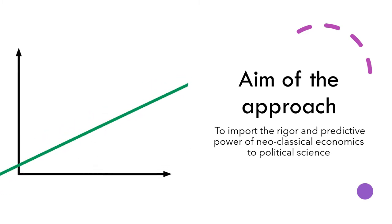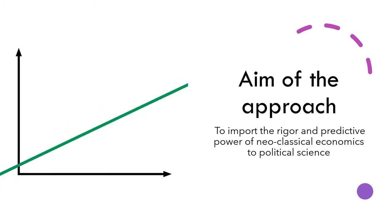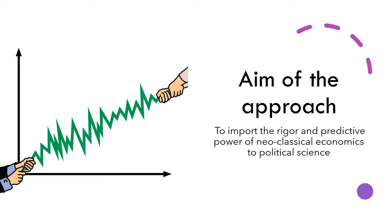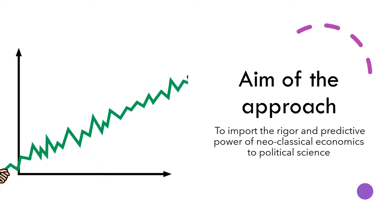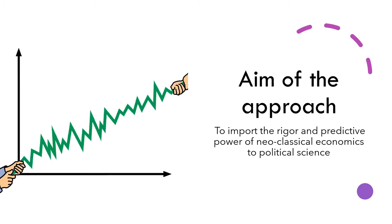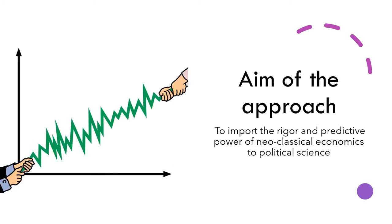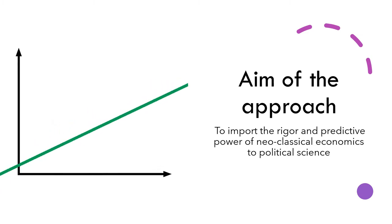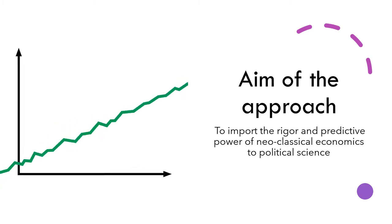For example, if a state ratifies the Universal Declaration of Human Rights, this does not mean that the state and its leaders are committed to it and its provisions, but because they see that it is in their advantage to ratify the declaration. As you can see, this is a more pessimistic view of state action, assuming that they only act based on self-interest.